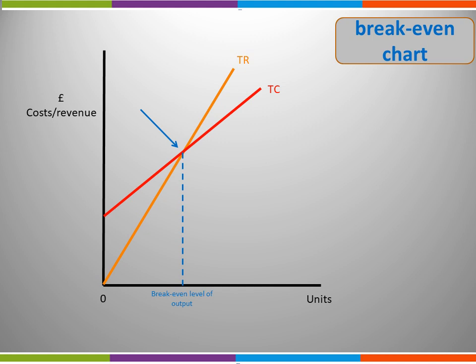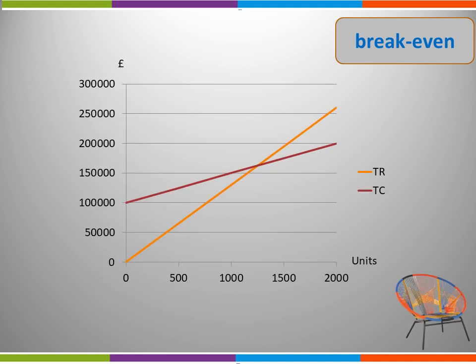Let's apply this diagram to our chair example. For the chair business we have our total cost and total revenue lines, and we can see where they cross. Drawing a vertical line down to the horizontal axis gives us the breakeven level of output. This particular business would have to sell 1,250 chairs in order to break even.